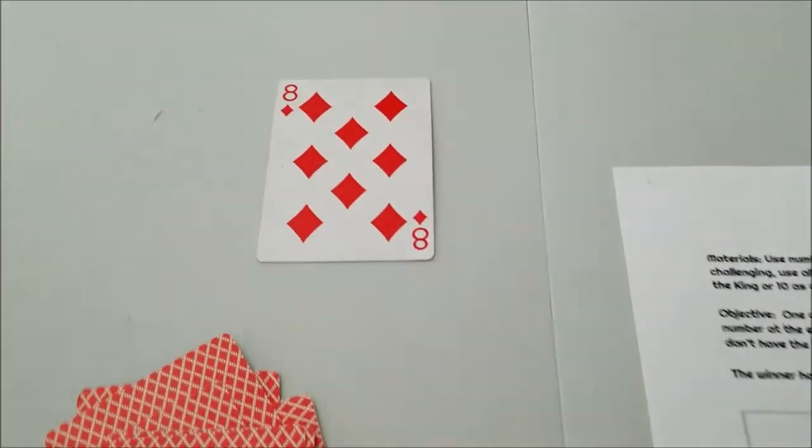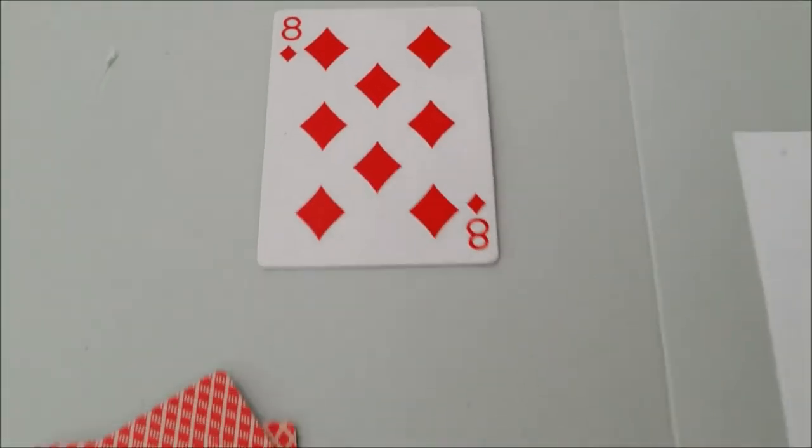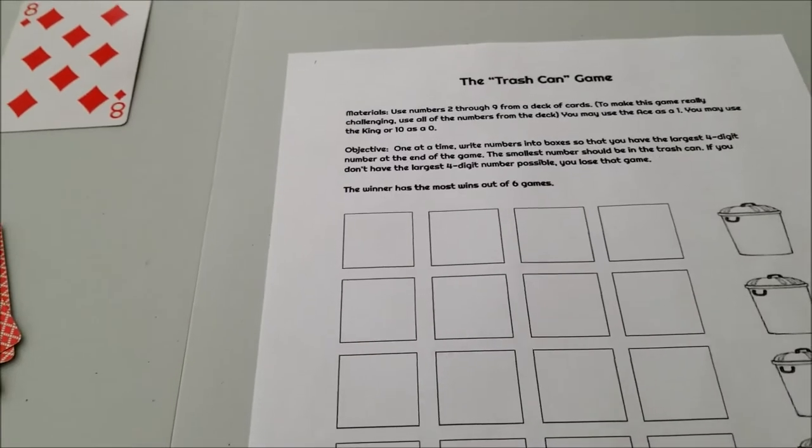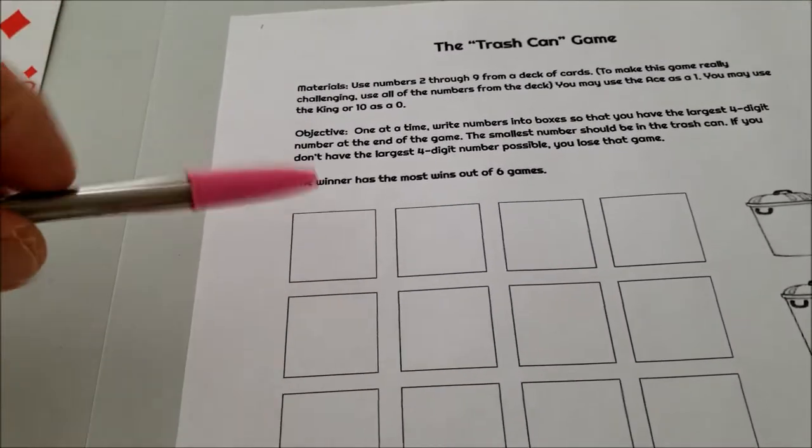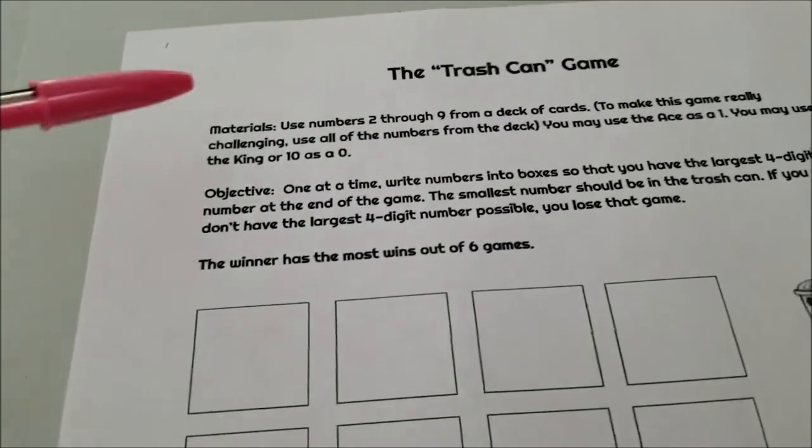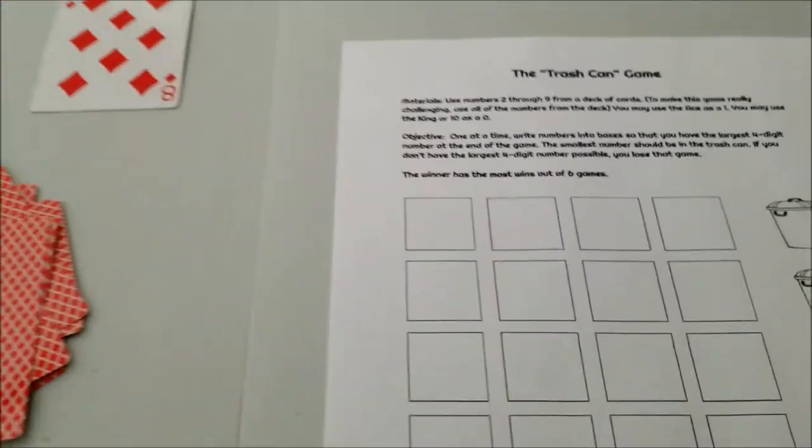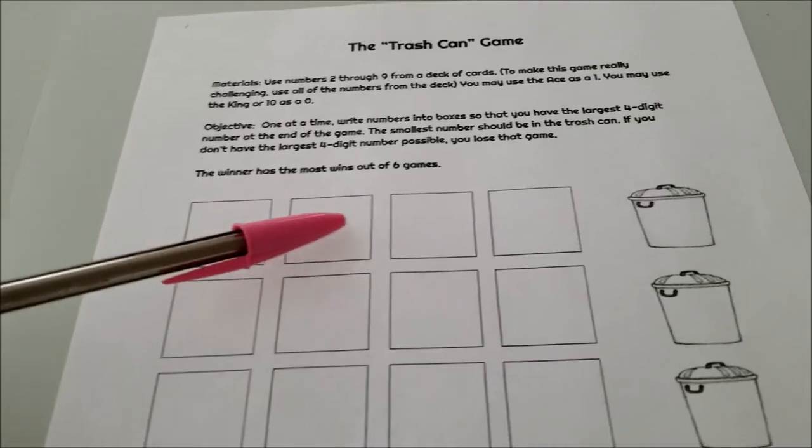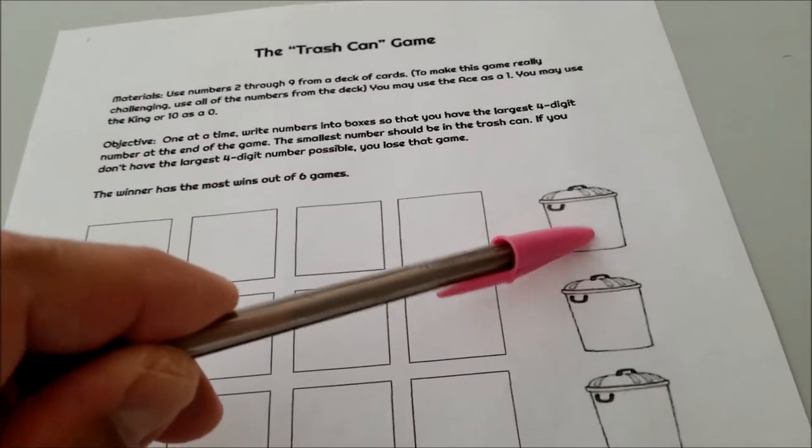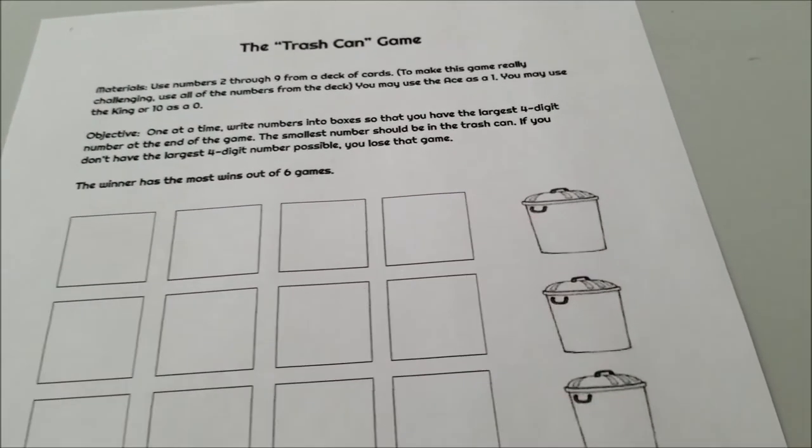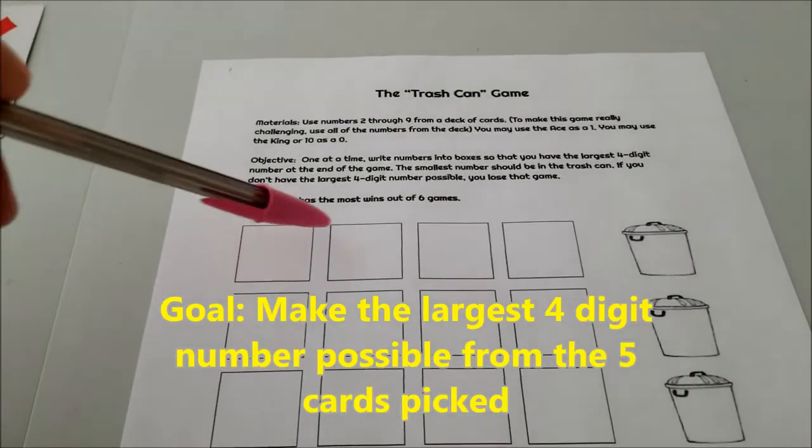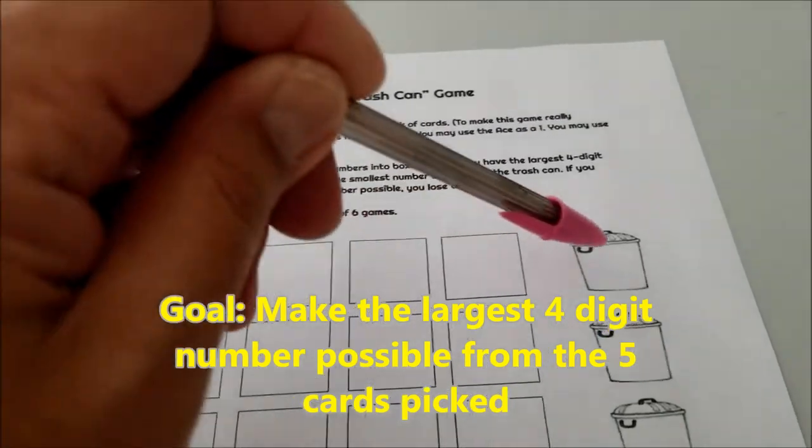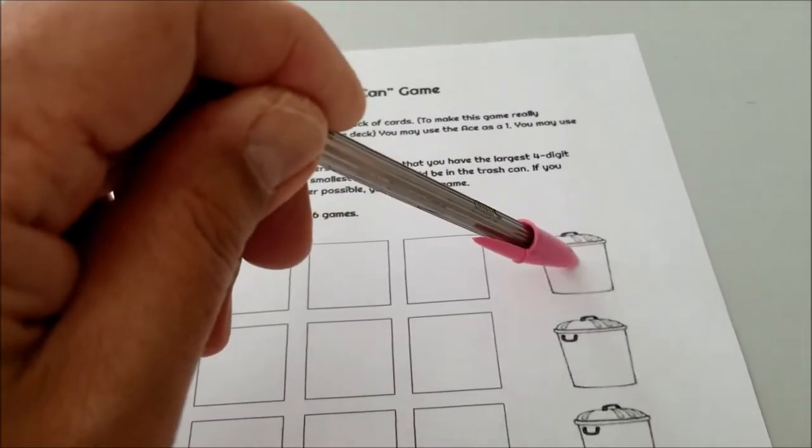You're going to flip the card over and whatever that number is, you have to place that number inside of a box. And your goal or your objective is, once we're done with the entire game, we're only going to flip over five cards. One, two, three, four, and then a number will get placed into the trash. Your goal is to have the largest four-digit number possible. And the smallest number is going to be in the trash.